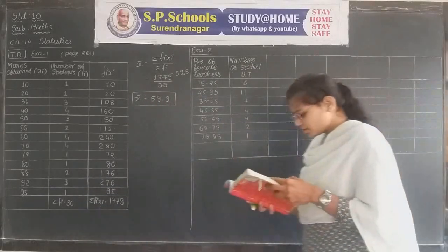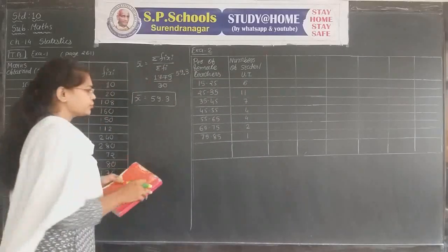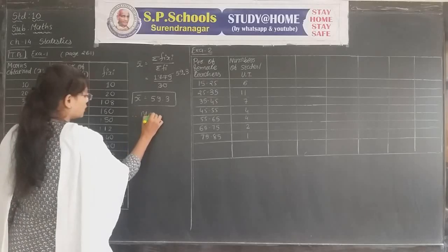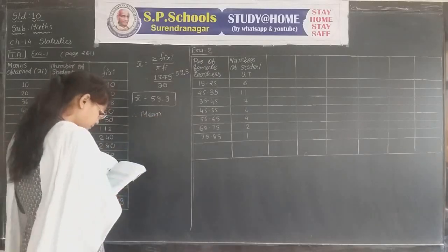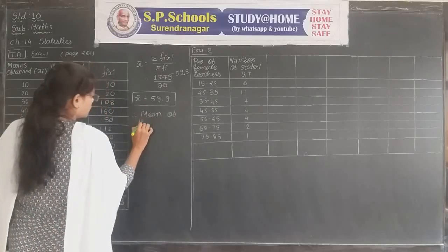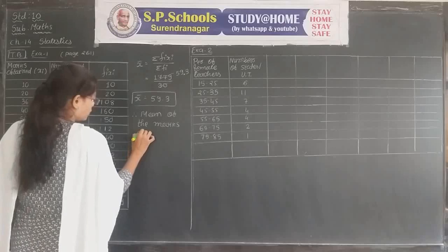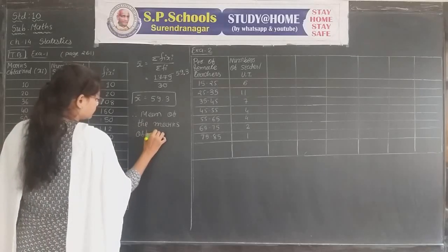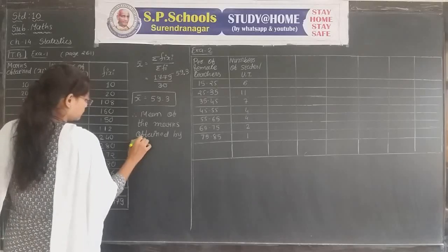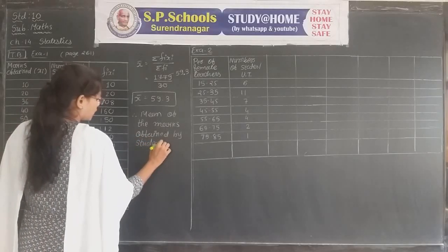The question says to find the mean of marks obtained by the students. Therefore, the mean of the marks obtained by students is 59.3. Hence the first example is completed.